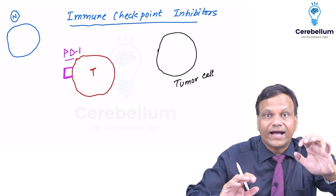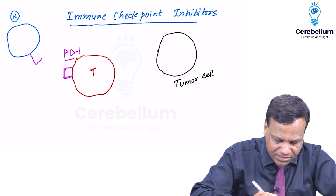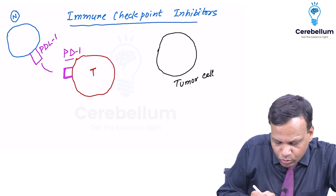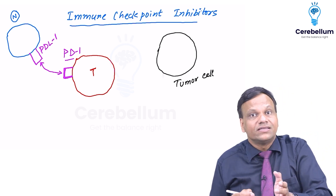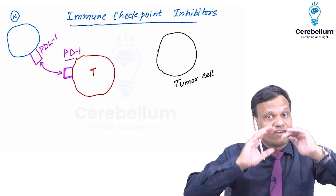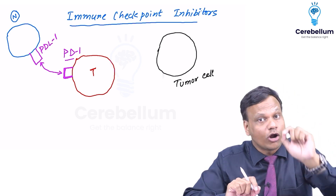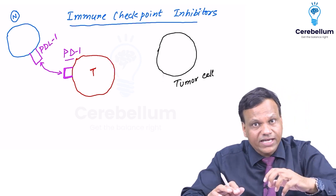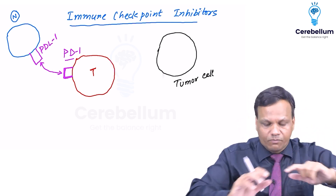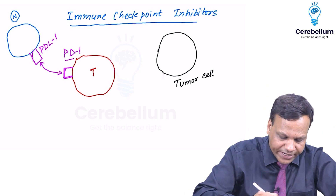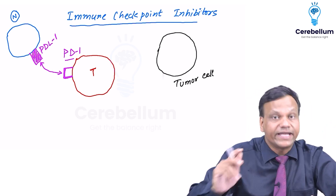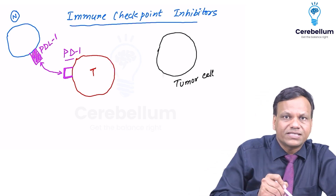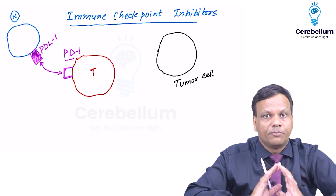Whenever the T cell tries to attack a normal cell, the normal cell has programmed death ligand 1 — PD-L1. This ligand binds to the PD-1 of the T cell, and when this binding occurs, the T cell finds that this is a normal cell and should not be killed. So whenever this interaction occurs, the T cells are inhibited. Immunity is kept under check against normal cells because this ID card — PD-L1 — is given to the normal cell. Tumor cells do not have this ID card.